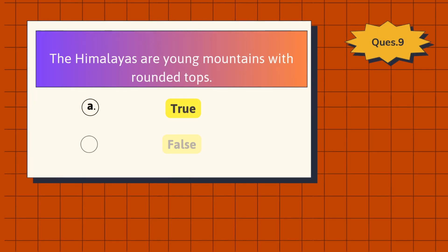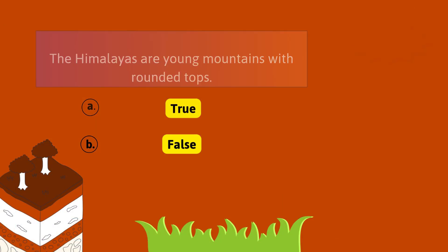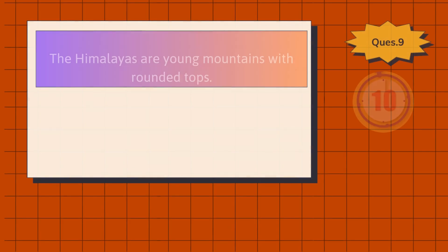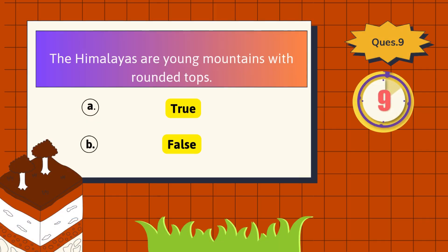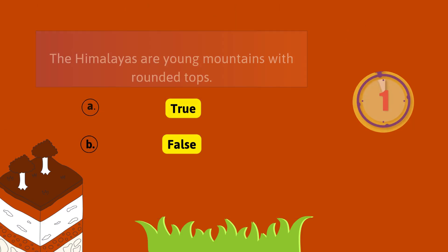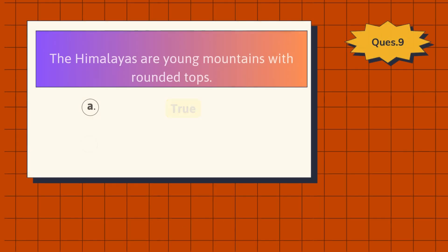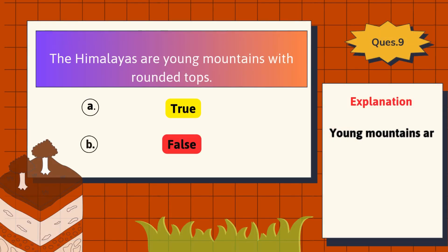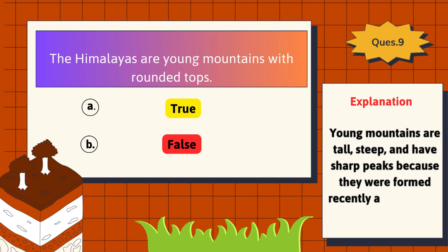True or False: The Himalayas are young mountains with rounded tops. The correct answer is False. Young mountains are tall, steep, and have sharp peaks because they were formed recently and have not been worn down by wind and rain.